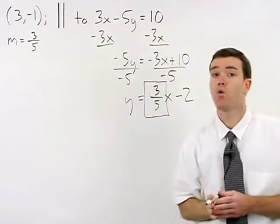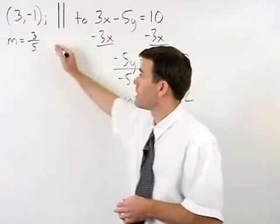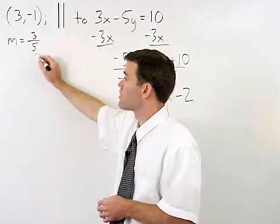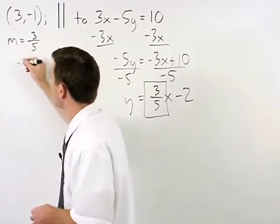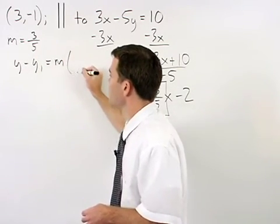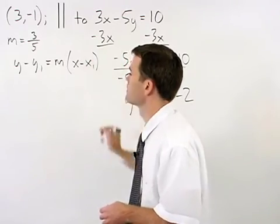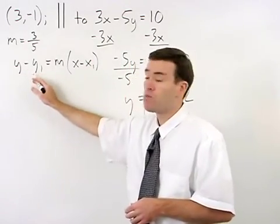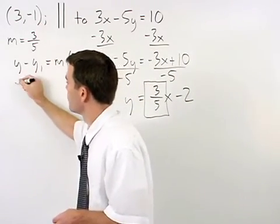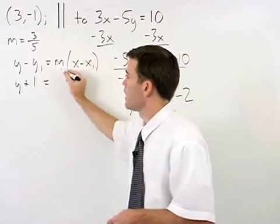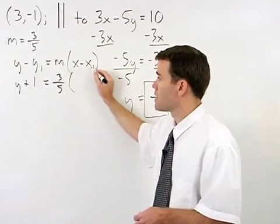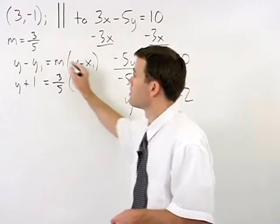So to write the equation of our line, we use the given point (3, -1) with a slope of 3 fifths in the point-slope formula: y minus y1 equals m times (x minus x1). y minus negative 1, or y plus 1, equals m which is 3 fifths times x minus x1, which would be x minus 3.